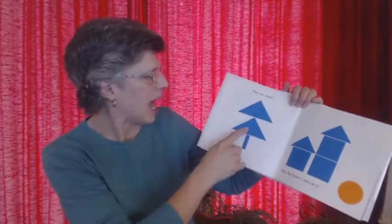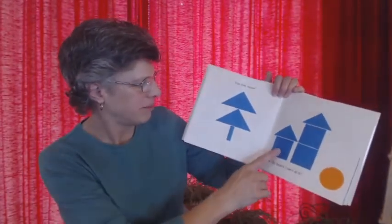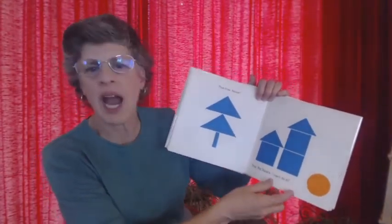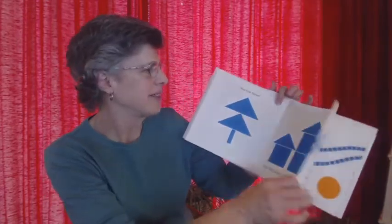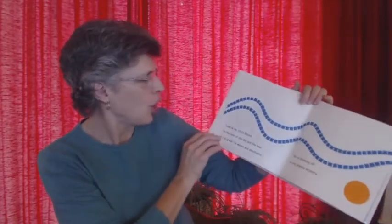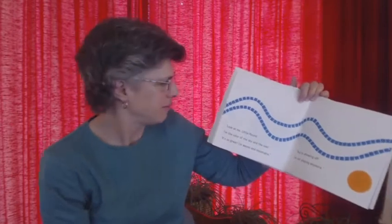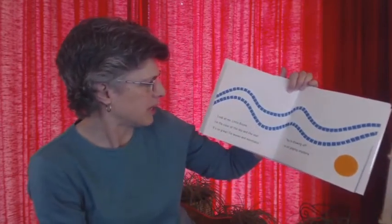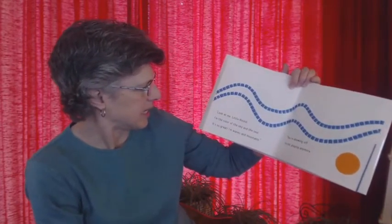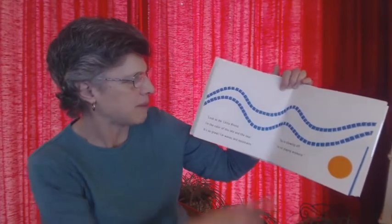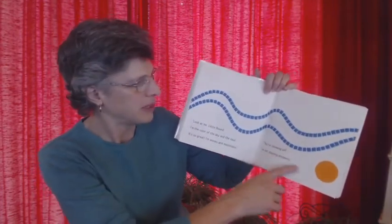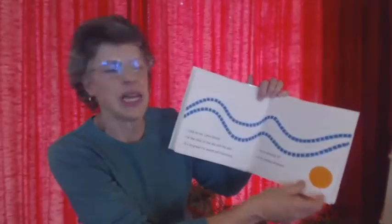Pine tree. House. Stop, Big Square. I can't do it. Look at me, Little Round. I'm the color of the sky and the sea. It's so great. I'm waves and mountains. You're showing off. I'm not playing anymore.